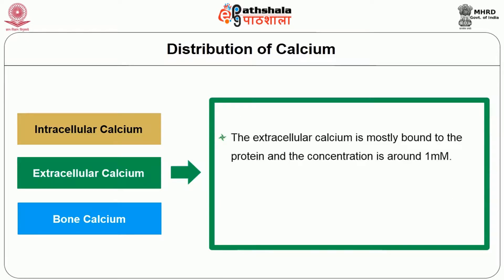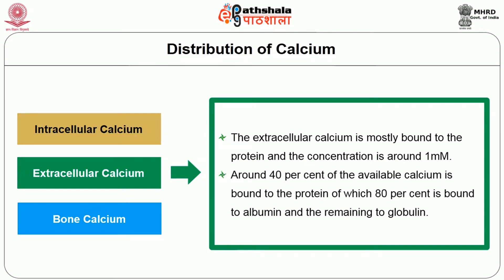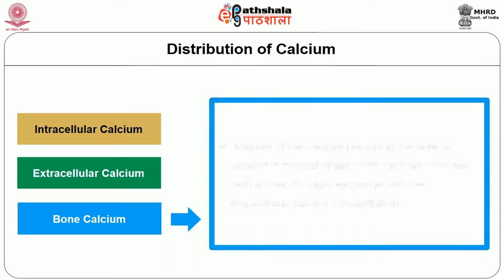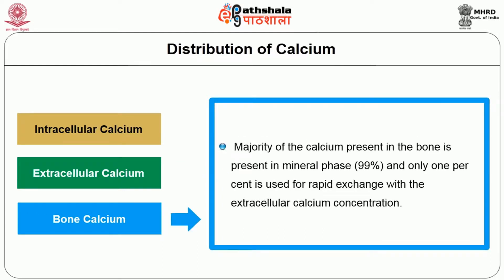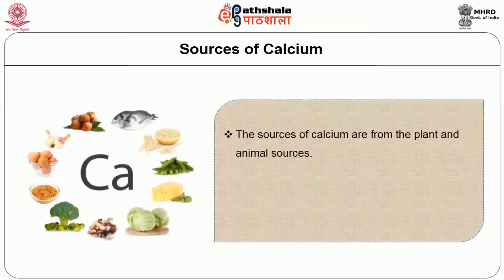The extracellular calcium is mostly bound to protein, and around 40% of the available calcium is bound to protein, of which 80% is bound to albumin and the remaining to globulin. Regarding bone calcium, the majority of calcium present in bone is in the mineralized form — around 99% — and only 1% is used for rapid exchange with the extracellular calcium concentration.